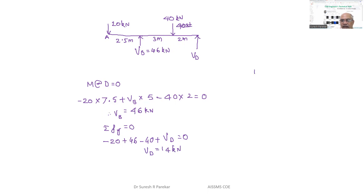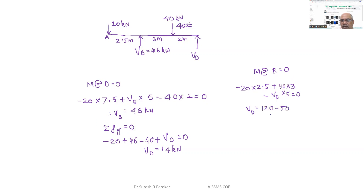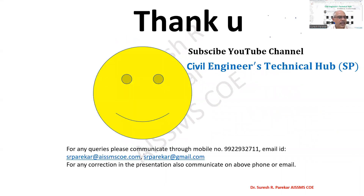You can also find V_D by taking moment about B = 0: −20 × 2.5 + 40 × 3 − V_D × 5 = 0. So −50 + 120 = V_D × 5, giving V_D = 70/5 = 14 kN. Preferably take the moment where the support is at the end. Likewise, we solve problems related to equilibrium.